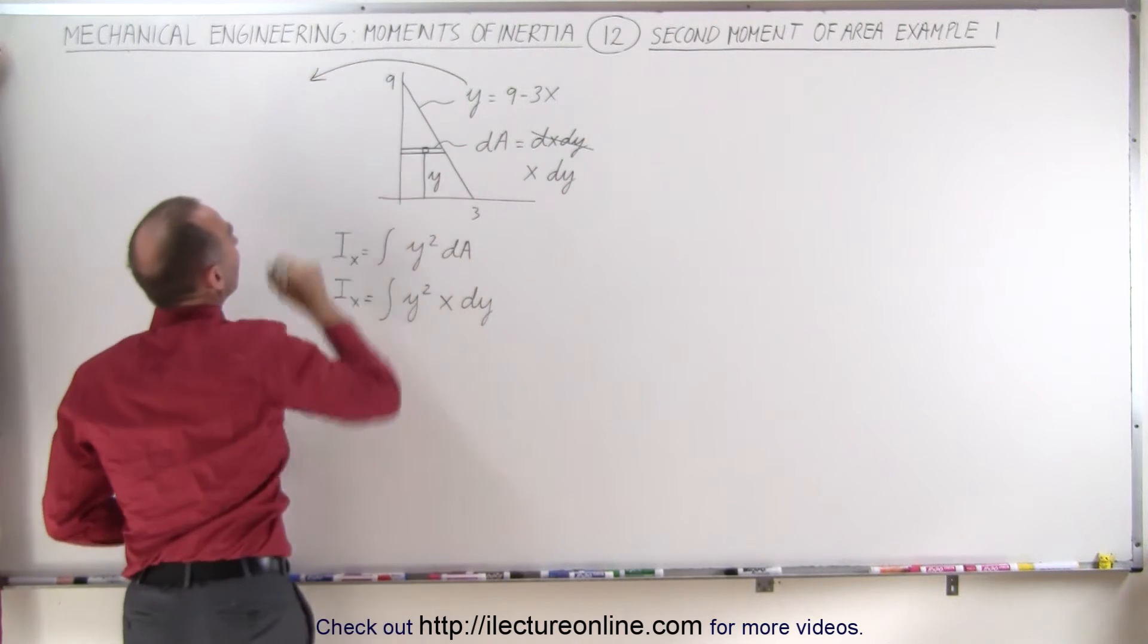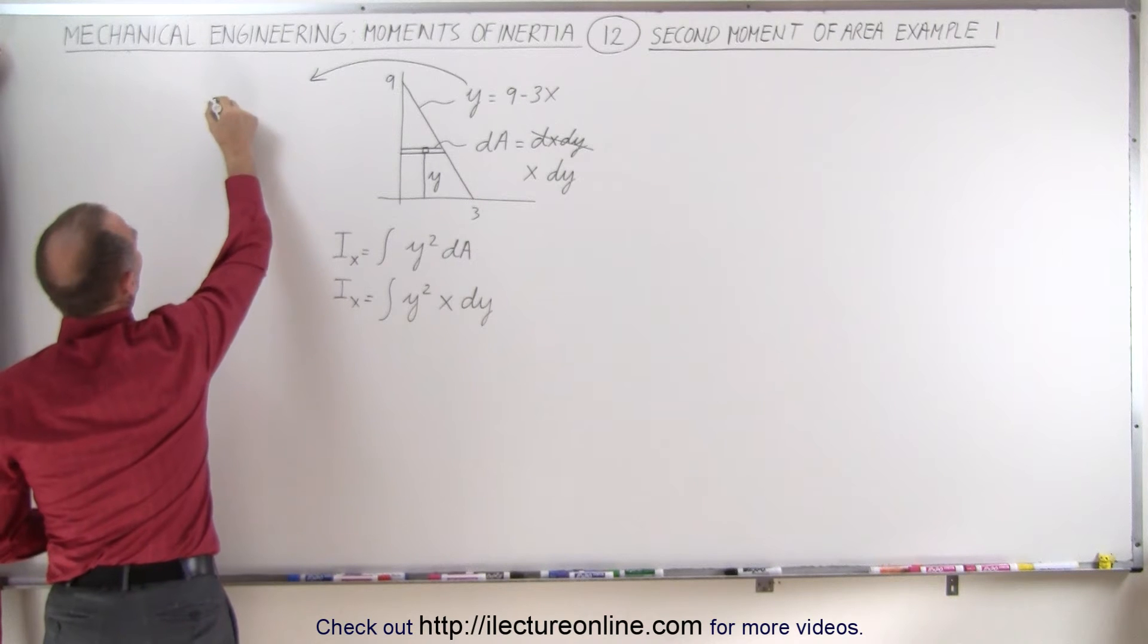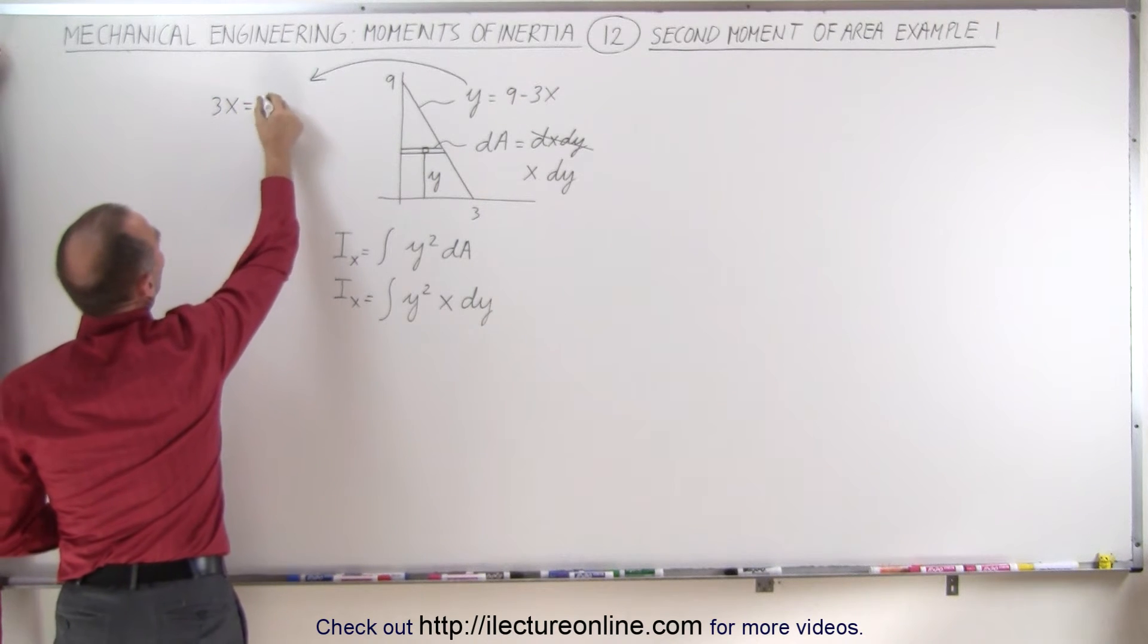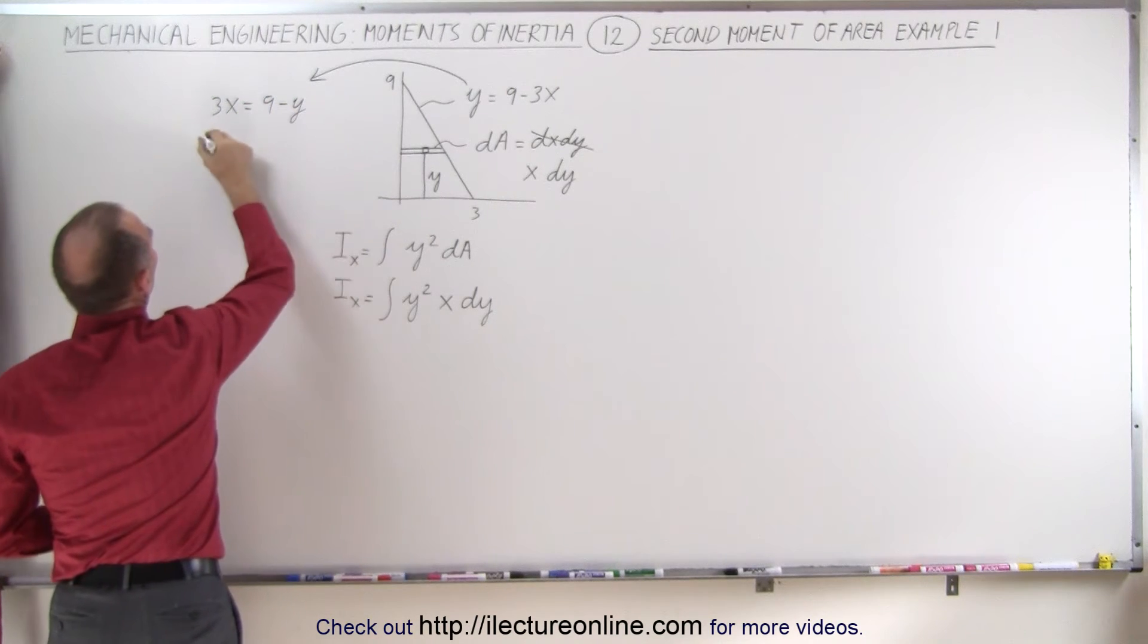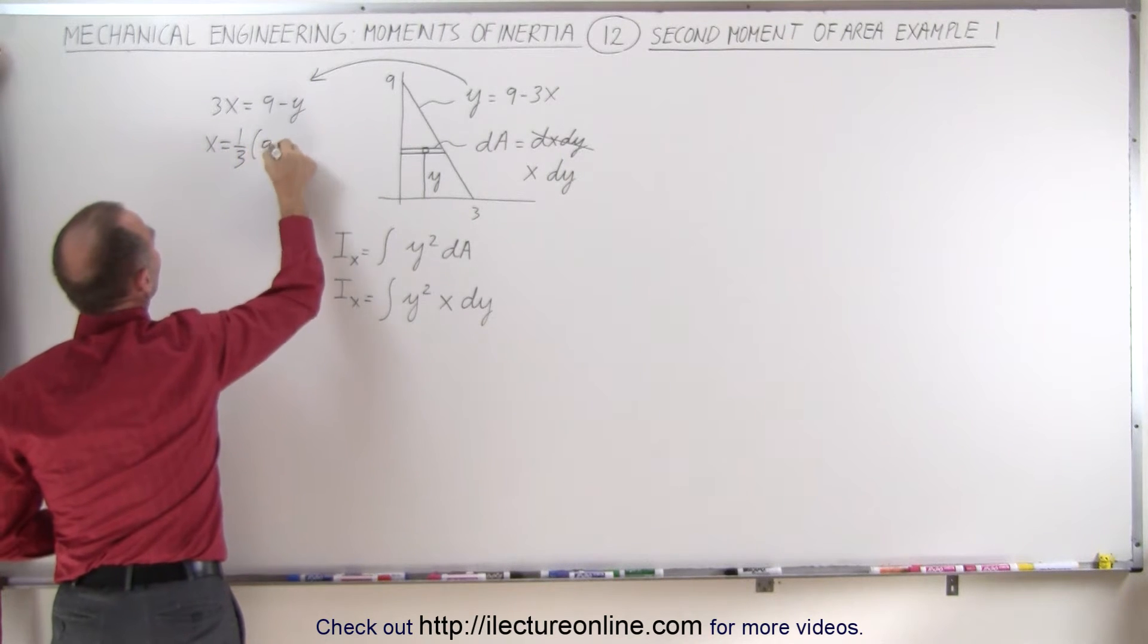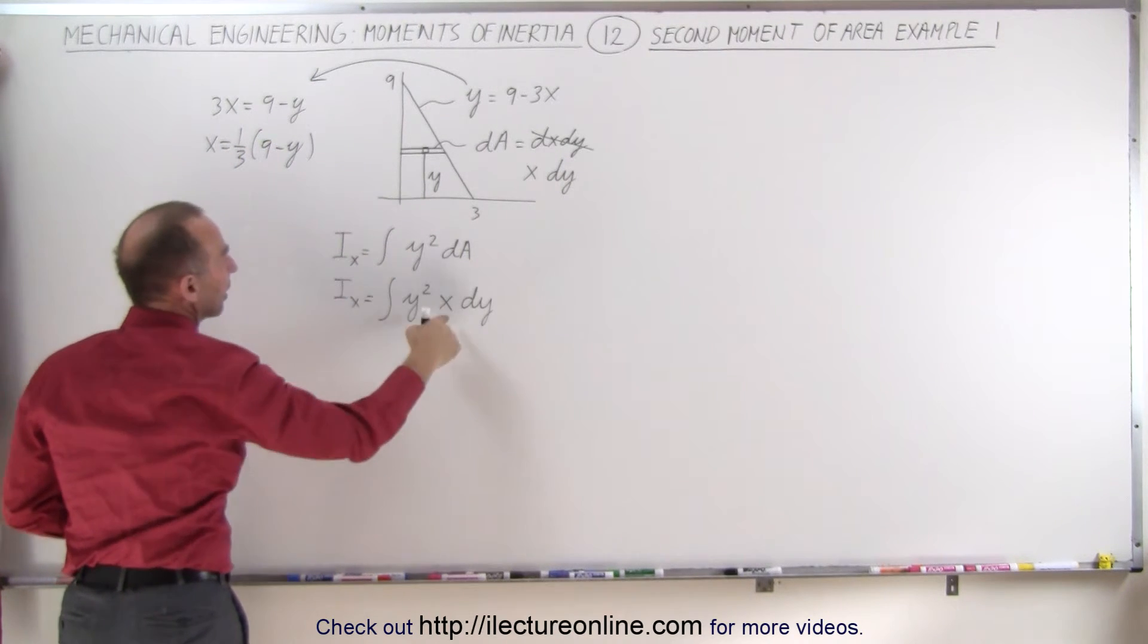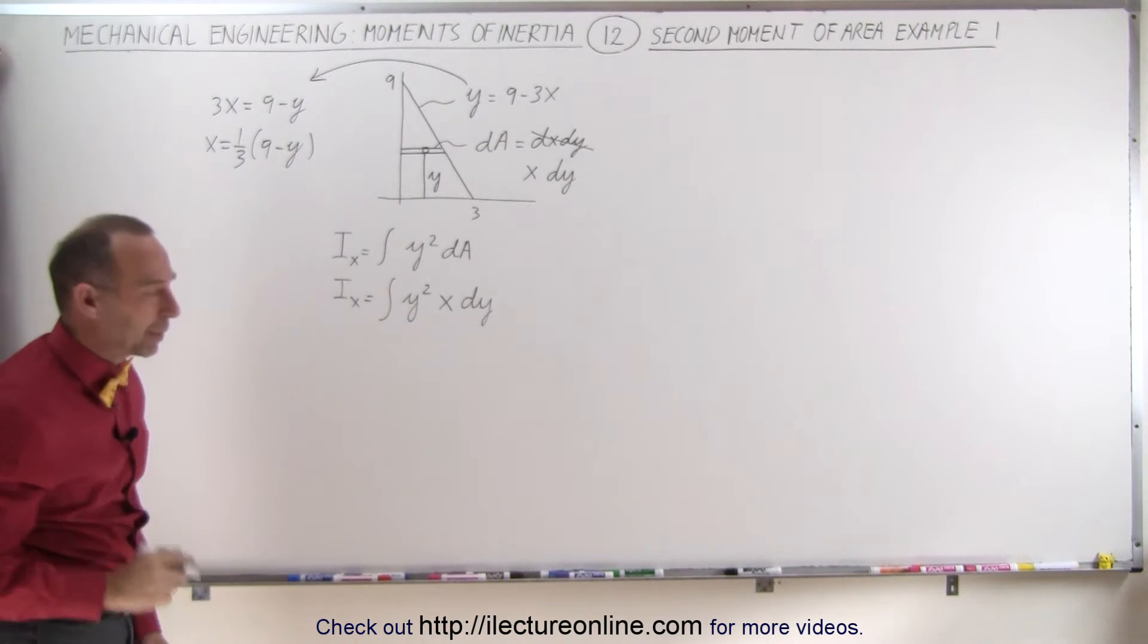So we take this equation right here and we write this as 3x equals 9 minus y, or x equals one third times 9 minus y, and substitute that in here for x. Let's see what we get now.